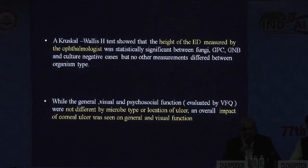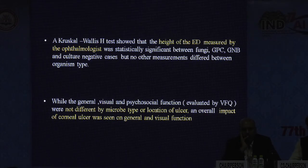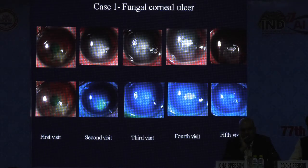The percentage of absolute measurements and the relative difference was very negligible between the ophthalmologists and image-based measurements. A Kruskal-Wallis H test showed that the height of epithelial defect measured by ophthalmologists was statistically significant between fungi, gram-positive cocci, gram-negative bacilli, and culture-negative cases, but no other measurements differed between organism type. While general visual and psychosocial function were not different by microbe type or ulcer location, an overall impact was seen on general function.